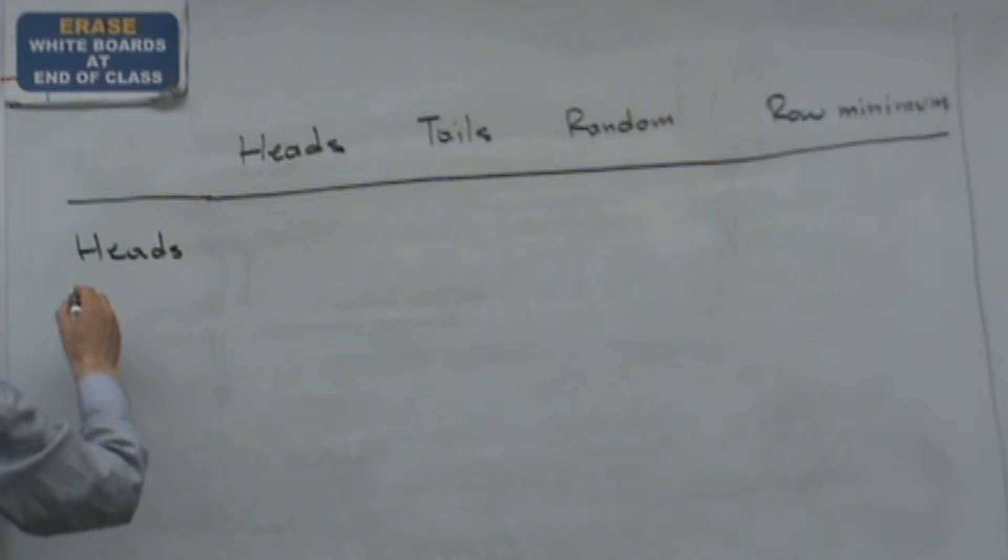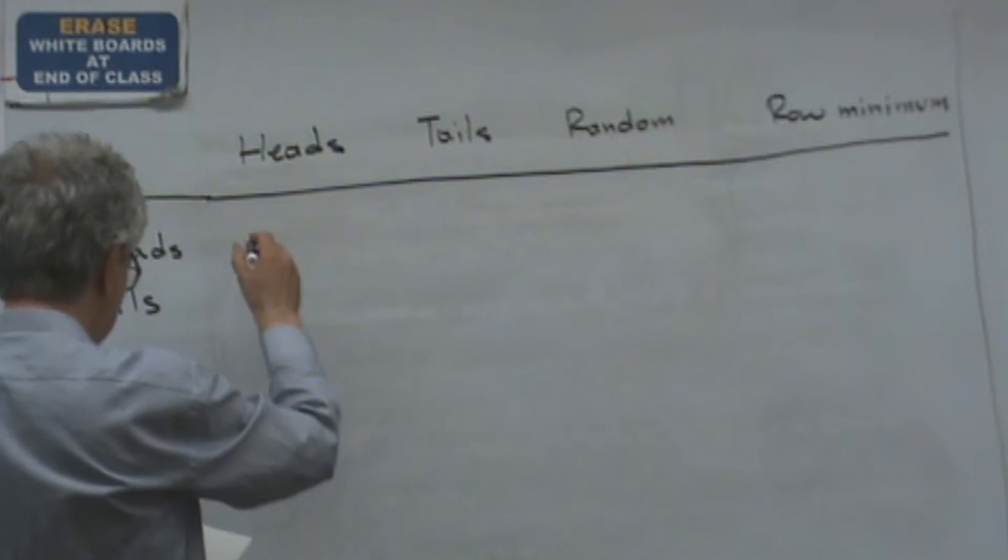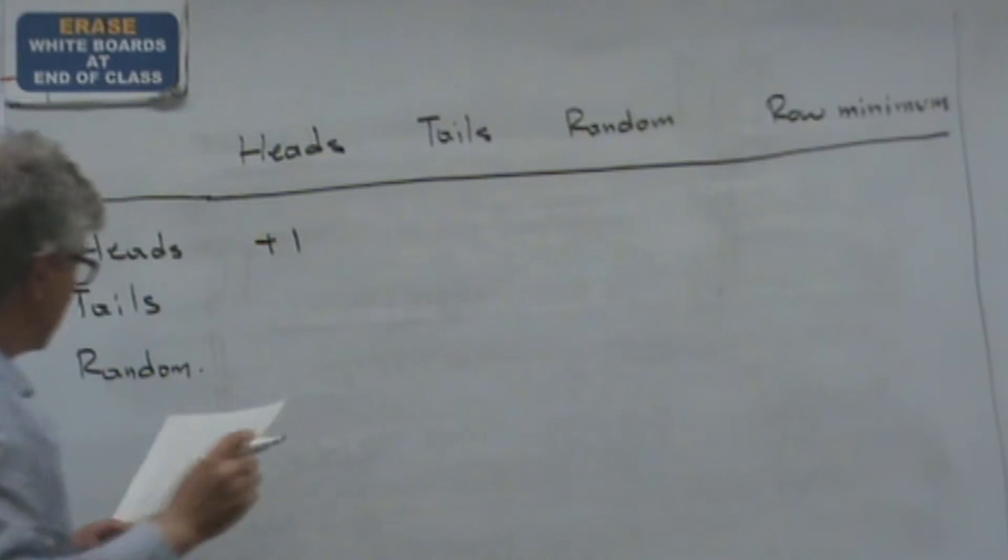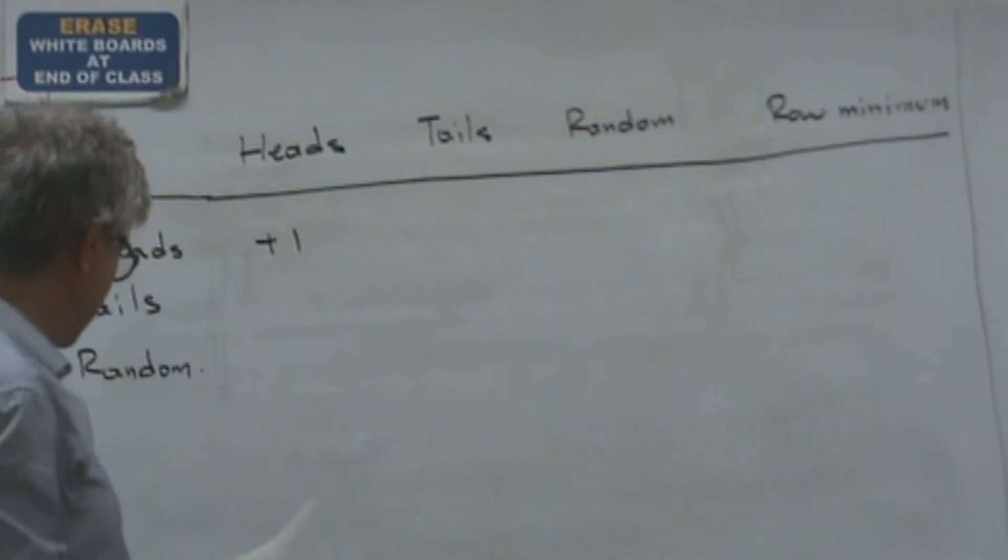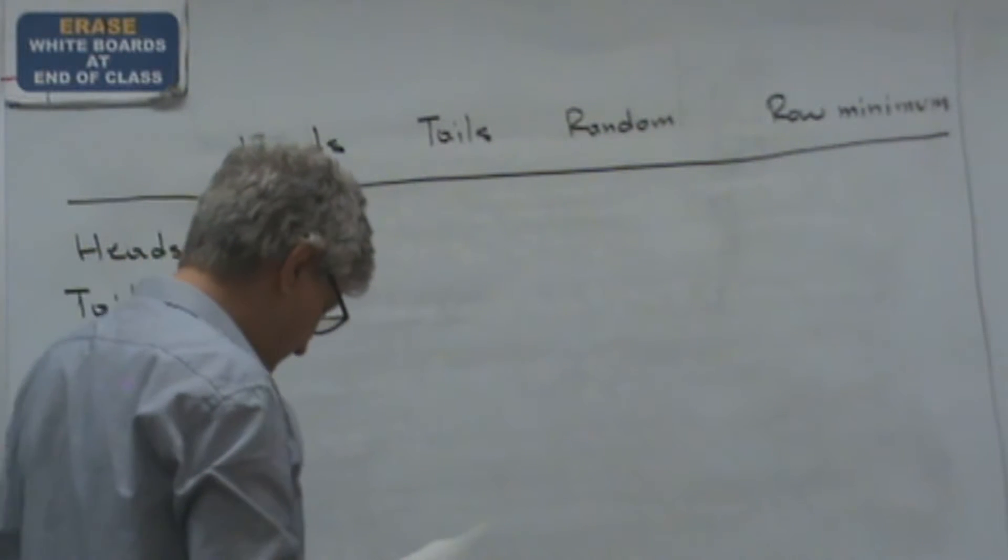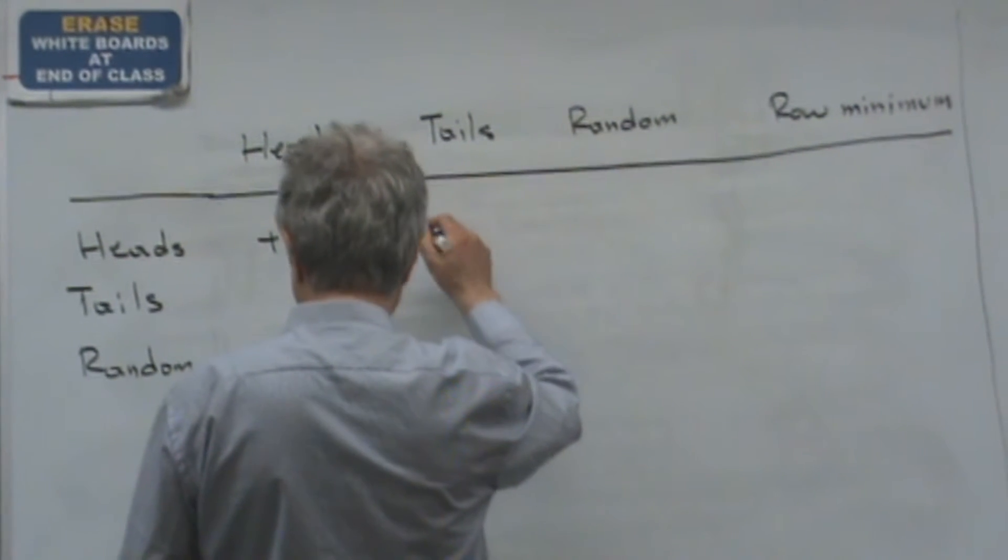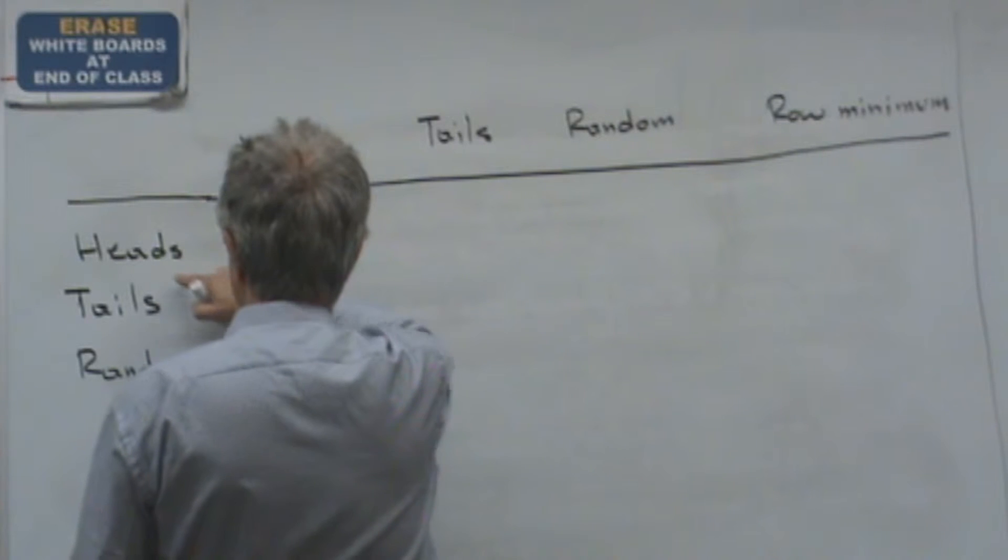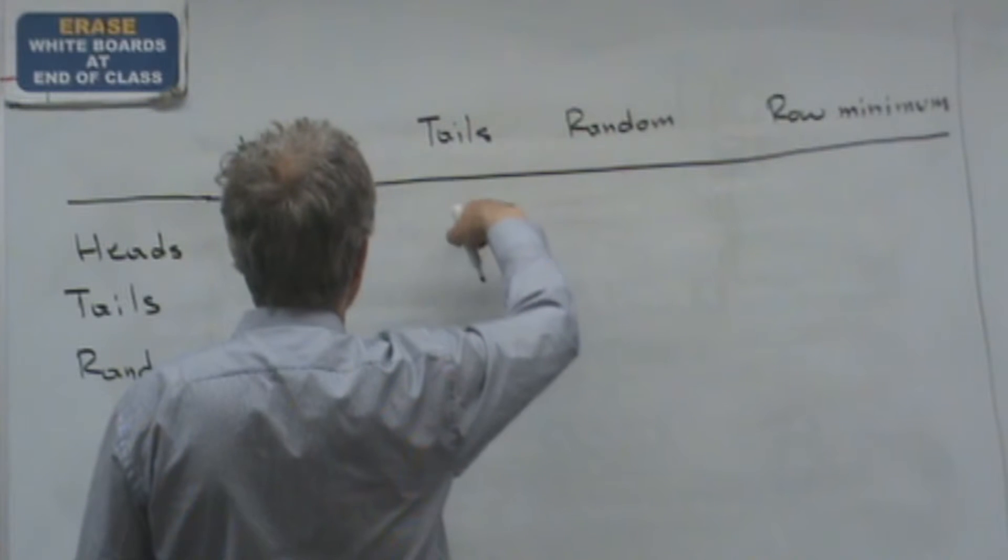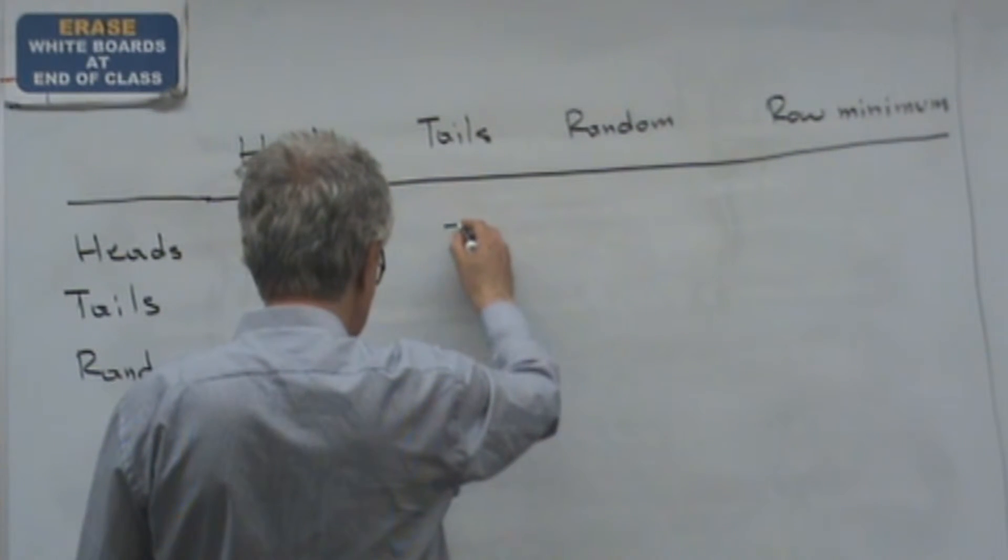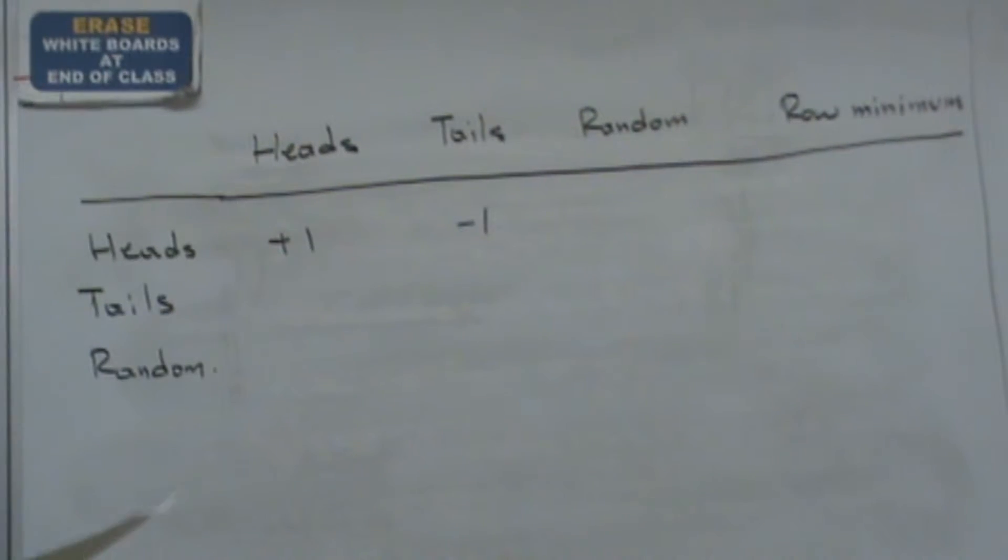The row player has also the same options. So we have heads, tails, and random. So if both players put a coin heads up, then the row player wins 1. If the row player still has heads, but the column player has tails, then the row player loses a penny.